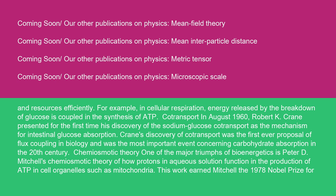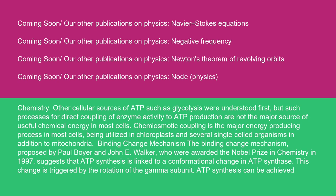Chemiosmotic theory, one of the major triumphs of bioenergetics, is Peter D. Mitchell's chemiosmotic theory of how protons in aqueous solution function in the production of ADP in cell organelles such as mitochondria. This work earned Mitchell the 1978 Nobel Prize for chemistry. Other cellular sources of ADP, such as glycolysis, were understood first, but such processes for direct coupling of enzyme activity to ADP production are not the major source of useful chemical energy in most cells. Chemiosmotic coupling is the major energy-producing process in most cells, being utilized in chloroplasts and several single-celled organisms in addition to mitochondria.